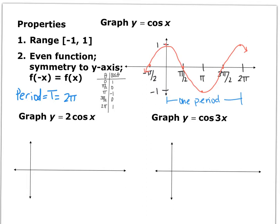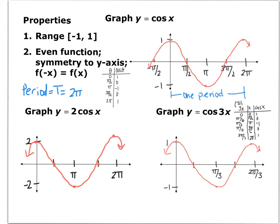You need to have both sine and cosine parent functions memorized. Now try these two transformations: y = 2cos(x) and y = cos(3x). For 2cos(x), all y-coordinates are stretched by 2, so instead of going from 1 to negative 1, the graph goes from 2 to negative 2. For cos(3x), all x-coordinates are multiplied by 1/3, shrinking the period — so instead of π/2, π, 3π/2, 2π, you divide everything by 3 to get π/6, π/3, π/2, 2π/3. The shape of the graph looks the same.